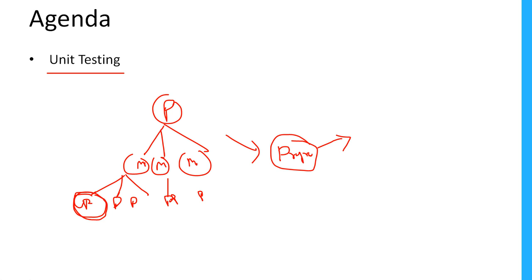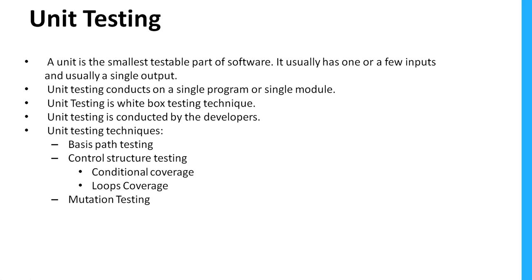What is unit testing? Unit testing is the smallest testable part of software. It usually has one or a few inputs and usually a single output. Let's say this is a unit or component or single program - it can give one or more inputs but normally it will give you one output.